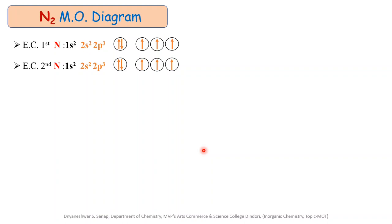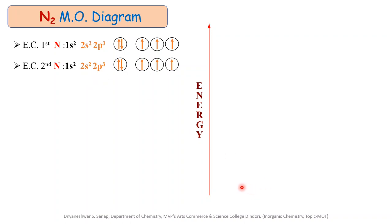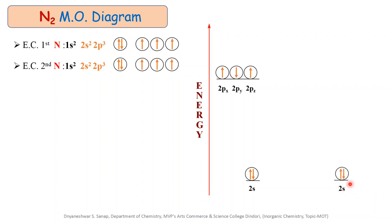Let us start drawing the molecular orbital energy level diagram. For the drawing, we have to write the atomic orbitals of each atom in increasing order of energy one by one. We write the atomic orbitals for the first nitrogen atom in increasing order: 2s2 at lower energy and 2p at higher energy. Similarly, we write the atomic orbitals of the second nitrogen atom on the right-hand side: 2s2 at lower energy and 2p3 at higher energy. When these 8 atomic orbitals combine together, they produce 8 molecular orbitals.